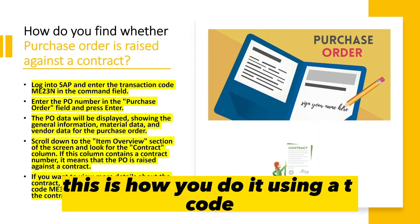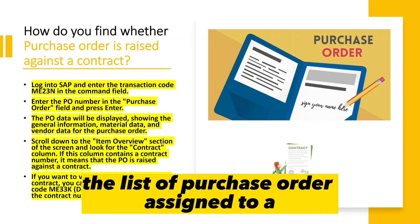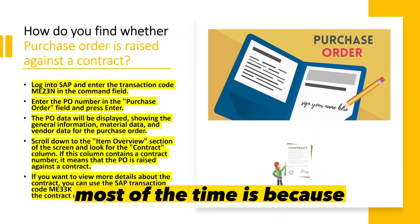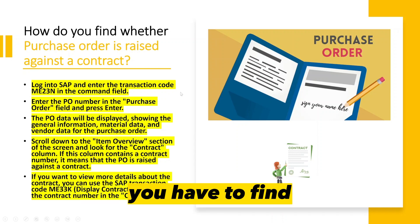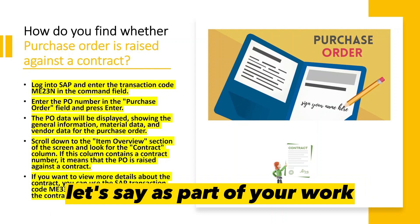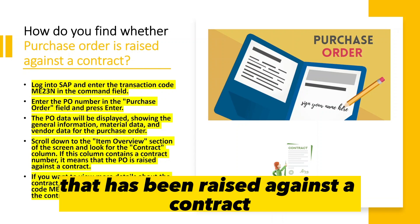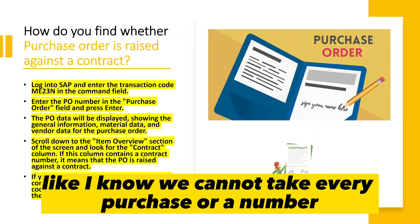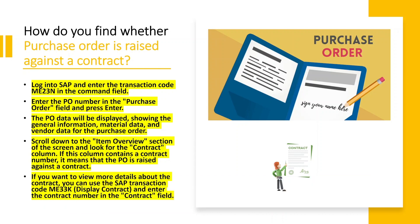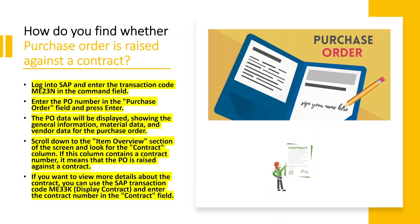Now let's look at how to find the list of purchase orders raised against a contract at a table level. The reason the table level approach is useful is that with the T-code method, you have to input each purchase order number individually to check if a contract is assigned. If you want to find the total list of purchase orders raised against a contract, you can't key in every PO number, so the easier way is to go to the table level in SAP.